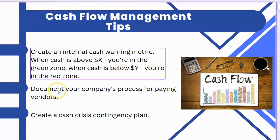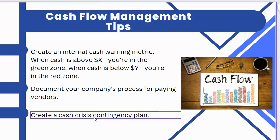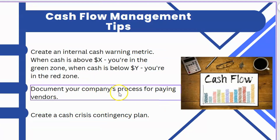Another cash flow tip is creating a cash crisis contingency plan. Especially with the SVB situation, you want to diversify your cash and have a plan in place if something like this happens again. It happened in 2009 and again in 2023, so the odds of it happening again are high. A simple plan could be: maintain at least two bank accounts, with one dedicated to payroll holding enough cash to process payroll for two months in the worst case scenario.